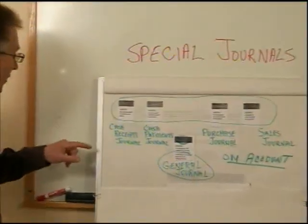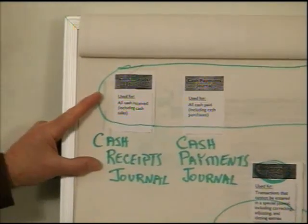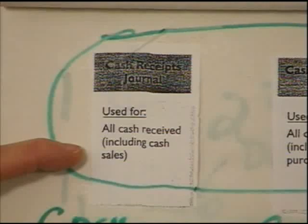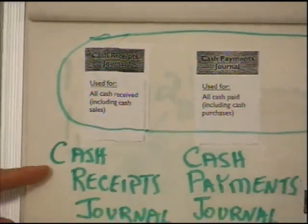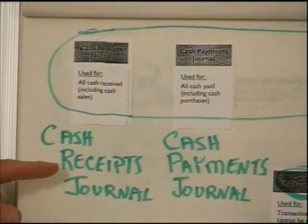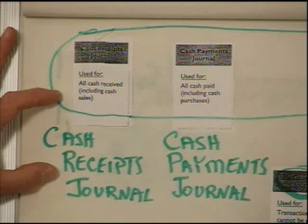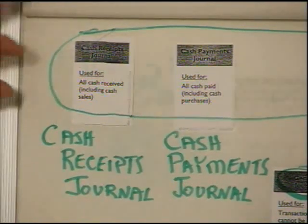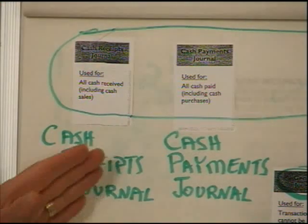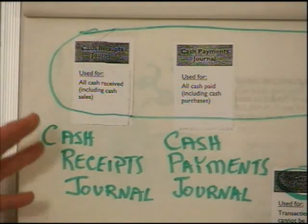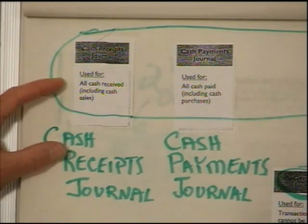Let's take a look at two journals that both have the title 'Cash.' The first one is the Cash Receipts Journal, and it's used for all cash received, including cash sales. All you have to really remember is: if it's cash coming into this business at all, it's always recorded in the Cash Receipts Journal. I don't care if it was for rent, a sale, or a refund — it has to go into the Cash Receipts Journal. Your text gives plenty of examples of how that's done.